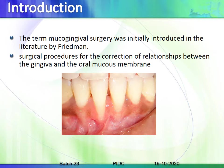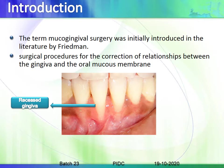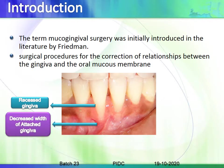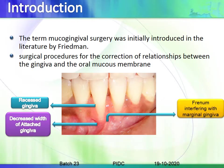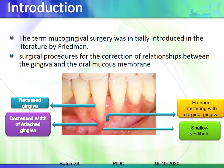Mucogingival surgery was mainly introduced to denote surgical procedures for correction of relationships between the gingiva and the oral mucous membrane. Problems in the gingiva include a recessed gingiva, a decreased width of attached gingiva, a frenum interfering with the marginal gingiva, or a shallow vestibule.